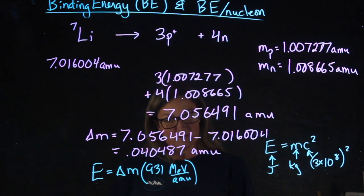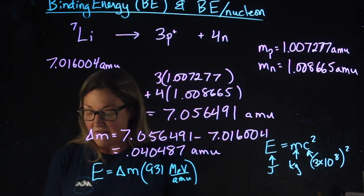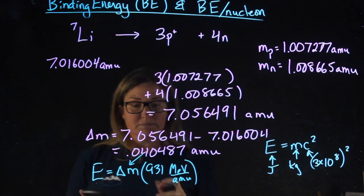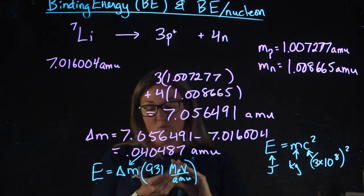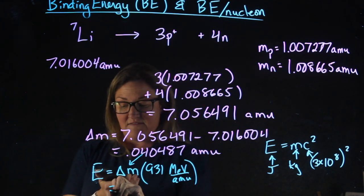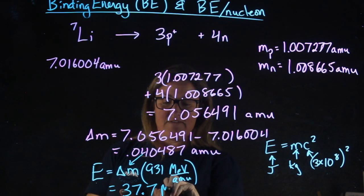MeV is mega electron volts. Taking this change in mass and plugging it in, 0.040487 times 931 gives me an energy of 37.7 MeV.